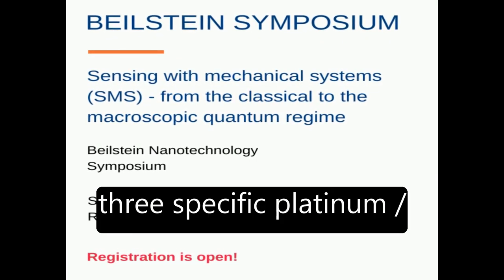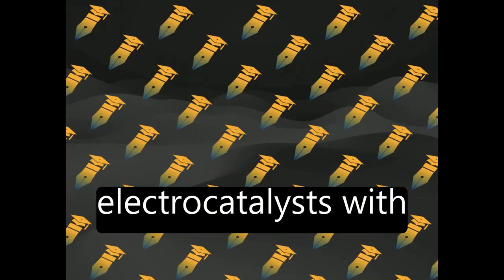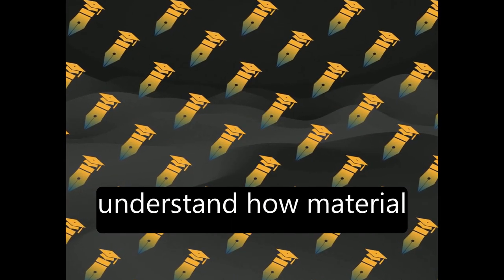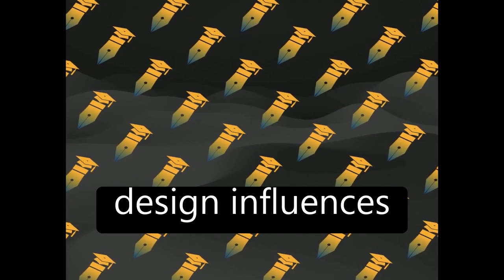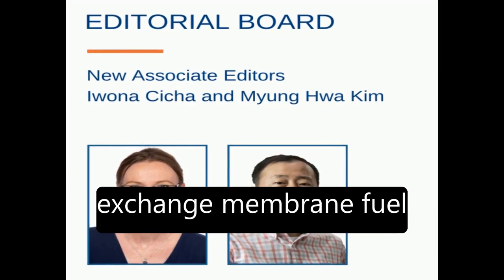The study investigates three specific platinum/carbon (Pt/C) electrocatalysts with different structural characteristics to understand how material design influences degradation processes on the nanoscale in proton-exchange membrane fuel cells.